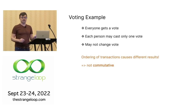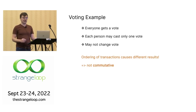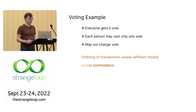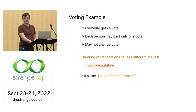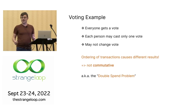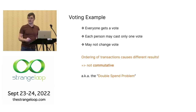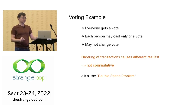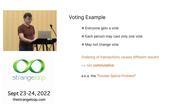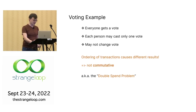If you're voting for A and B, it matters which vote gets submitted first. If you vote for A first, that's the final answer and it's never going to change. This problem is also referred to as the double spend problem. It really matters if you're paying two people whether your money goes to person A or person B — and plenty of money has been lost this way.